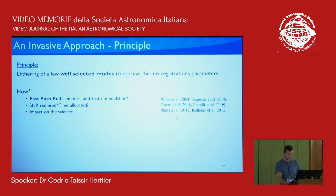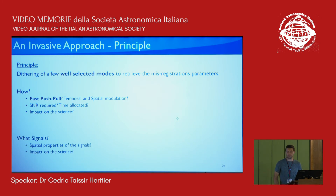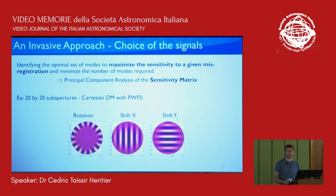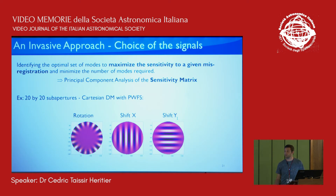I will only consider fast push-pull measurements for simplicity. What we want to discuss is what type of signals we need and the spatial properties of the signal and what the impact on the scientific path will be. We want to minimize the number of signals required to accurately identify the misregistration parameters. To do that, we propose a principal component analysis of a sensitivity matrix. The sensitivity matrix defines the sensibility of the system to a misregistration, and if you do an eigenvalue decomposition, the first eigenmodes explain the most variance due to the perturbation. For a simple system, this gives you modes such as rotation, shift X, and shift Y — which are quite intuitive and expected to be sensitive to the misregistration.